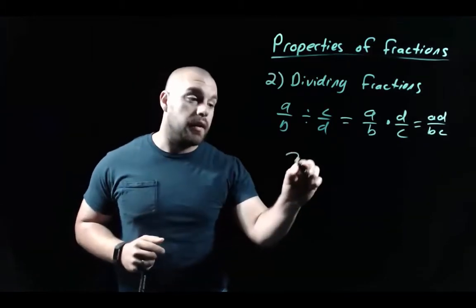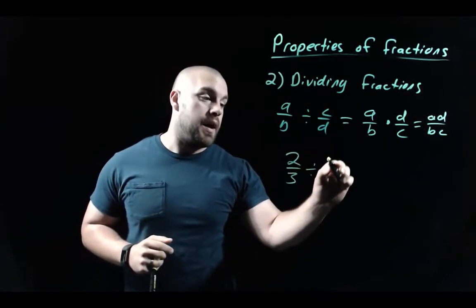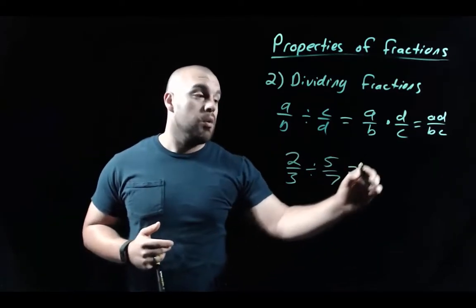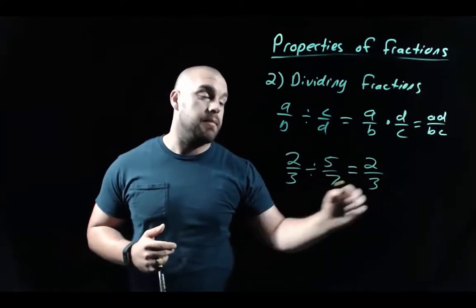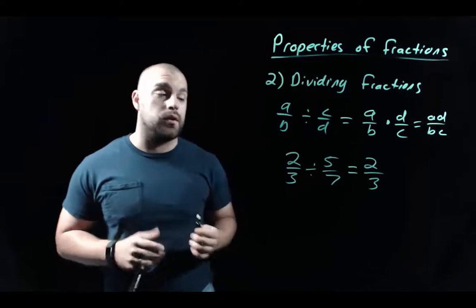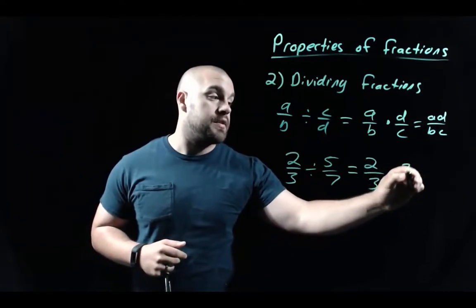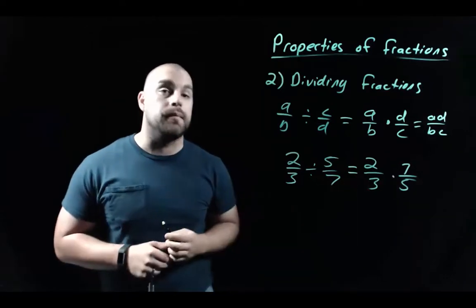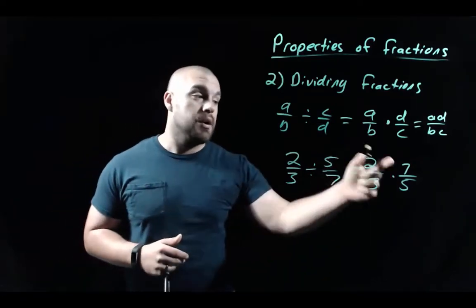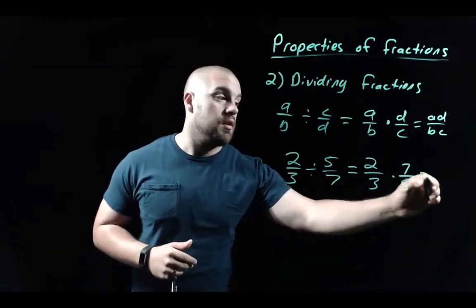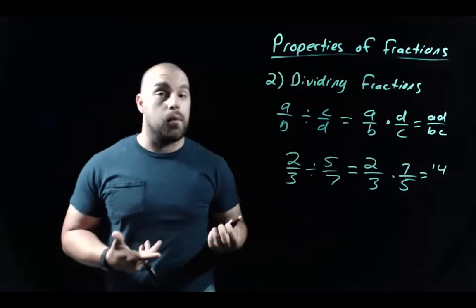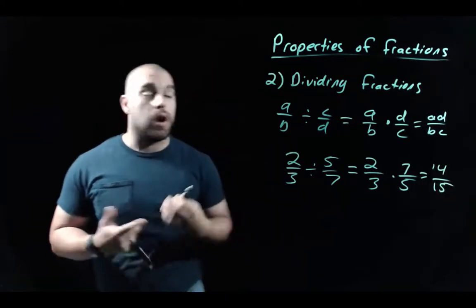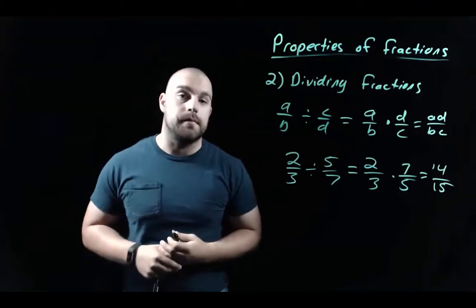For example, 2-thirds divided by 5-sevenths: we keep 2-thirds, flip the second fraction to 7-fifths, and multiply. So 2 times 7 on top gives 14, and 3 times 5 on bottom gives 15. Our answer is 14 over 15.